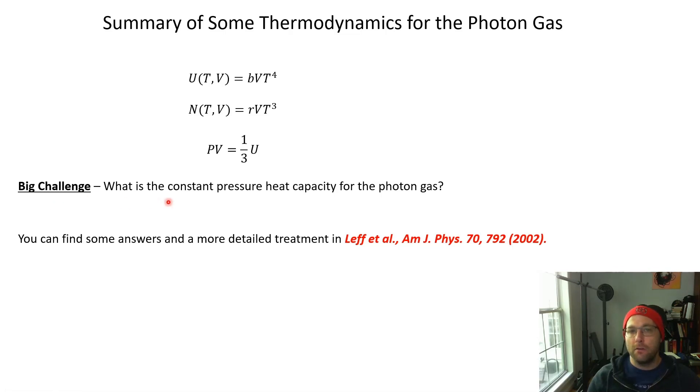If you're thinking of something to challenge yourself, think about trying to calculate the constant pressure heat capacity for the photon gas. You can try to turn the crank on thermodynamics. I think you will find it's not easy to turn the crank for that particular quantity, and it's kind of interesting to think about why. Give it a try. This is actually the most challenging conceptually to do for the thermodynamics of the photon gas. You could try some other ones like what's the Gibbs free energy, what's the grand potential. That's interesting because we know grand potential is the right potential for thinking about quantum statistical mechanics.